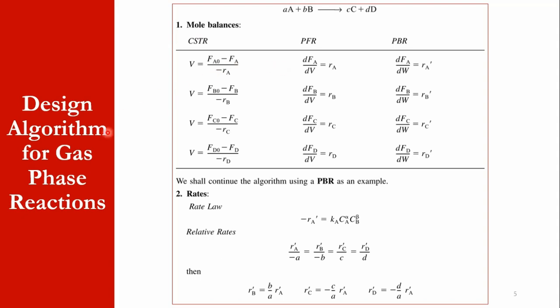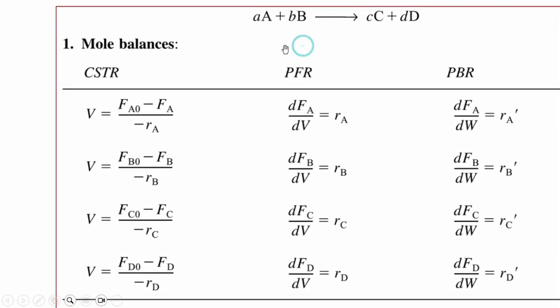Now for gas phase reactions, how we can apply the mole balance and rates. Accordingly, small a is the stoichiometric coefficient of species A, small b is the stoichiometric coefficient of species B, and accordingly C and D.